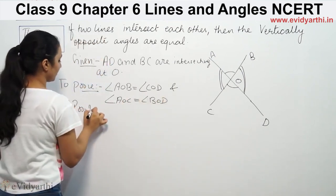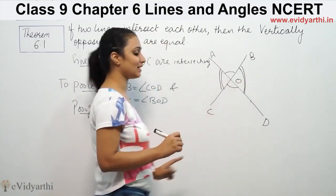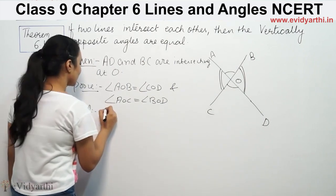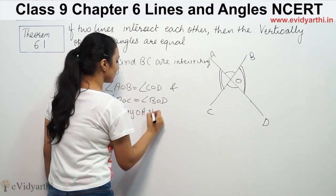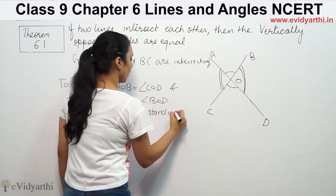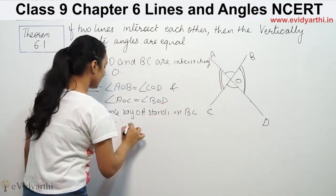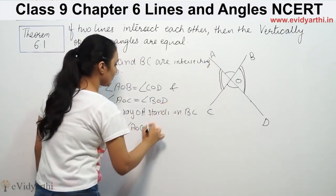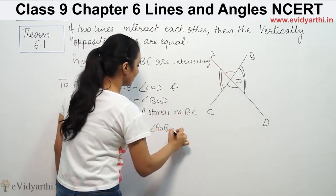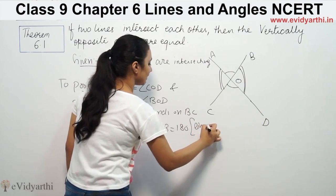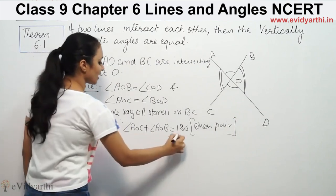Proof. We have to prove that this line stands on BC. Since OA stands on BC, therefore angle AOC plus angle AOB is equal to 180 degrees. This is linear pair. So we have the first equation.